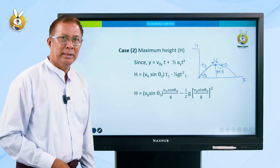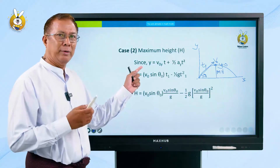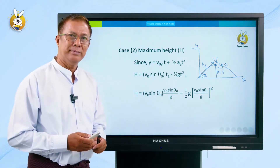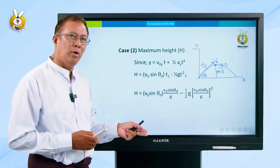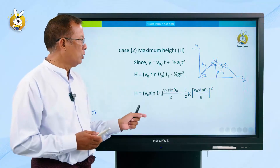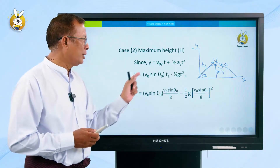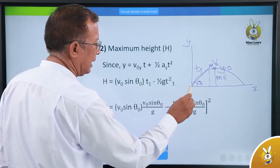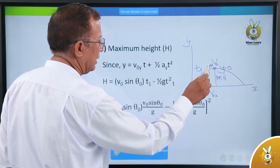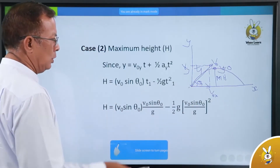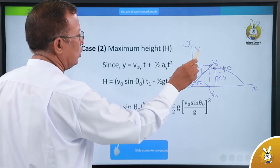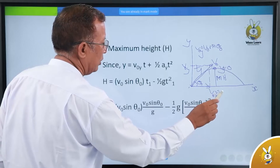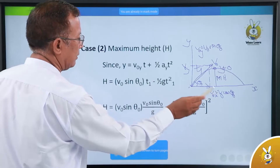Maximum height. The equation is D1 is equal to V0Y·T plus half A in Y squared. V0, as we already know, signs are theta. So here is V-naught-X, here is V-naught-Y.